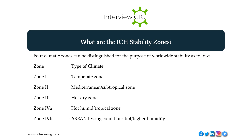What are the ICH Stability Zones? Four climatic zones can be distinguished for the purpose of worldwide stability testing: Zone I — Temperate Zone; Zone II — Mediterranean/Subtropical Zone; Zone III — Hot Dry Zone; Zone IVA — Hot Humid/Tropical Zone; Zone IVB — Testing conditions for hot, higher humidity.